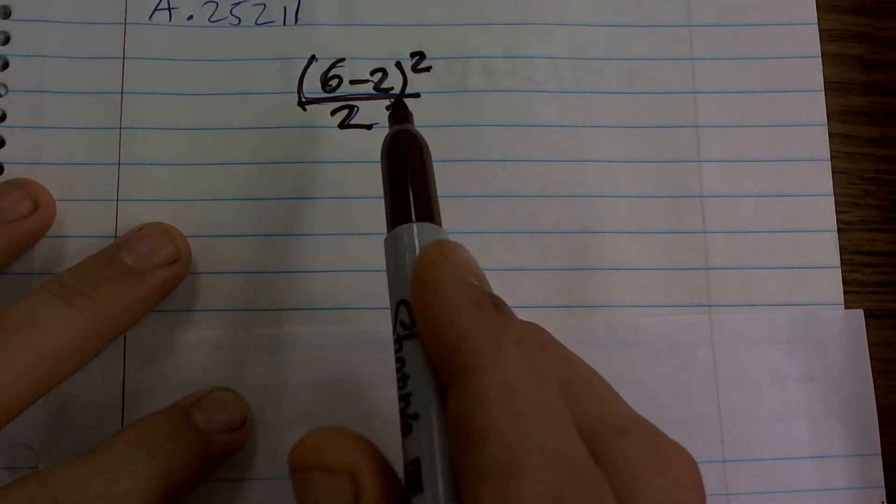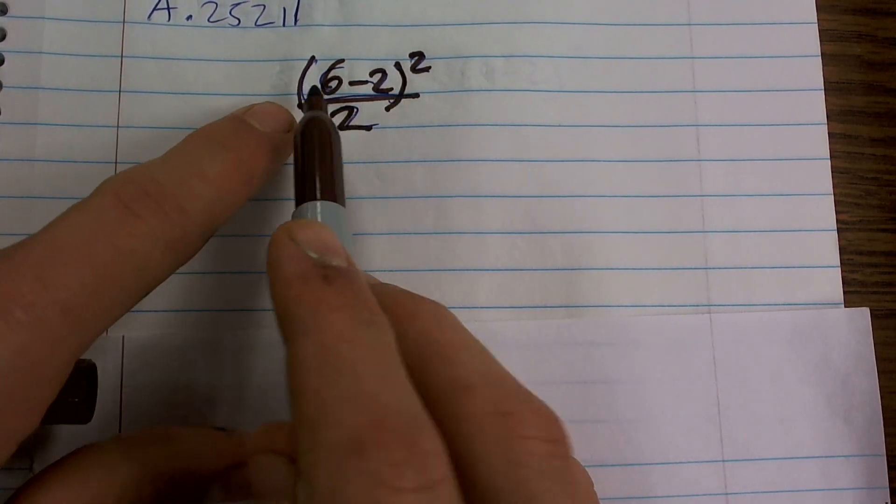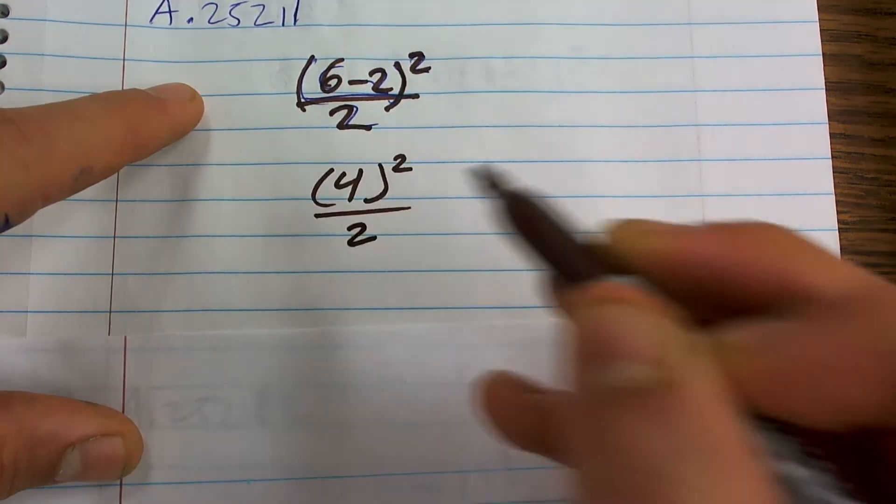Okay, so I have (6-2)² divided by 2. Inside my parentheses, I have 6 minus 2. I got to do that first. That is 4² divided by 2.